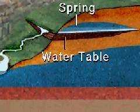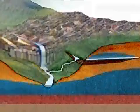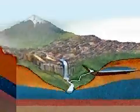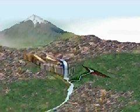A river is born at its source when underground springs reach the earth's surface and join rainwater and melted snow that have collected into streams. Other streams flowing into the new river are called tributaries.